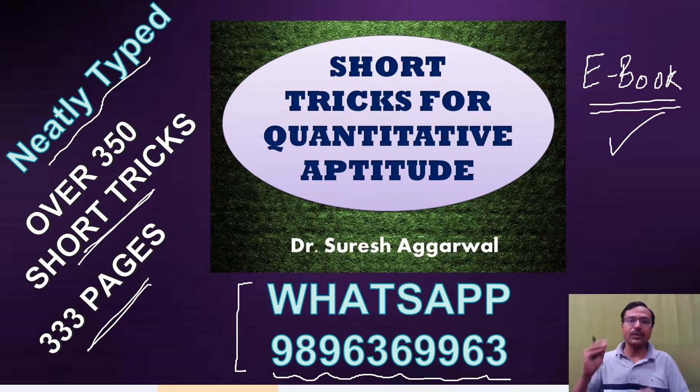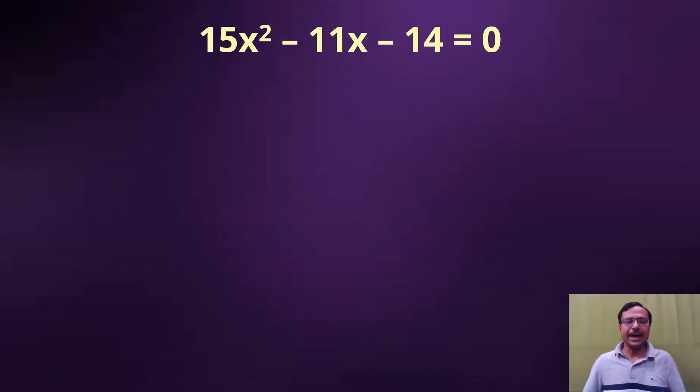You will find random tricks one here one there, one in the form of video, one in the form of PDF, but not such a huge collection of these short tricks for quantitative aptitude exams. So let us see the question in hand here we have 15x² minus 11x minus 14 equal to 0.